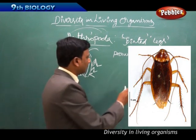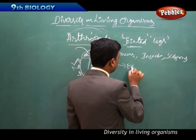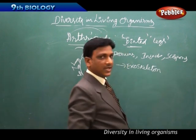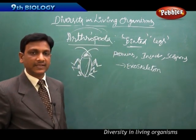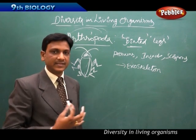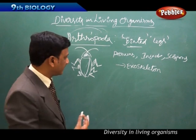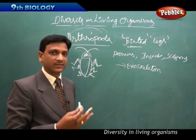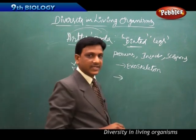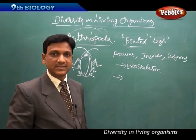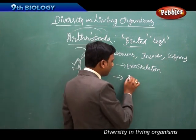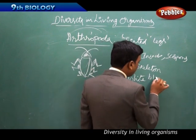Arthropoda have an exoskeleton — a skeleton on the outside of the body. Unlike higher animals like humans, whose skeleton is inside covered by muscles and skin, arthropods have an outer skeleton. They also have a true body cavity, but their coelomic cavity is filled with white-colored blood.